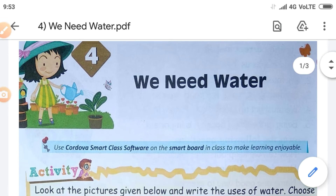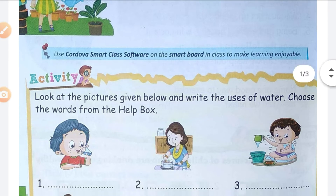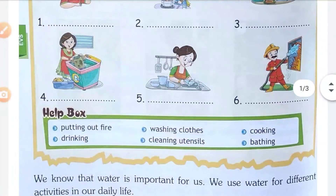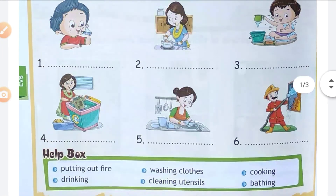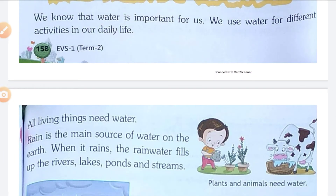Now I am going to read this lesson. You have to do the reading practice like this at your home. Lesson number four: 'We Need Water.' Activity — look at the pictures given below and write the uses of water. Choose the words from the help box. Here is the help box. In this way you have to complete this activity.